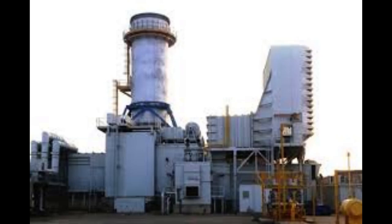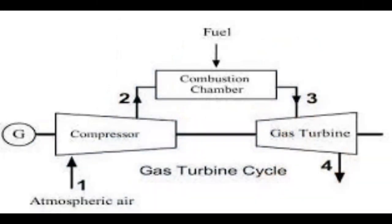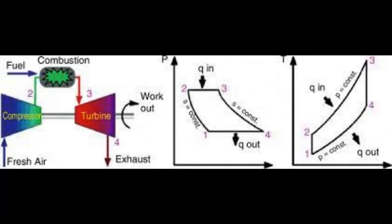Atmospheric air flows through the compressor that brings it to higher pressure. Energy is added to the air by heating it in a combustion chamber, generating a high temperature flow. This high temperature pressurized gas enters a turbine, producing a turning force used to drive the electrical generator.